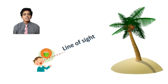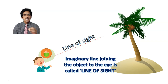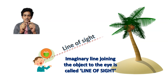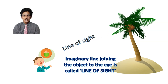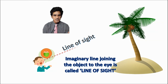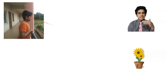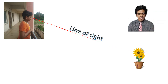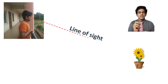That imaginary line joining the object at which you are looking to the eye is called the line of sight. That line is called line of sight. If you are looking downwards at something, the line of sight will be downwards. If you look straight, the line of sight will be horizontal, parallel to the earth.